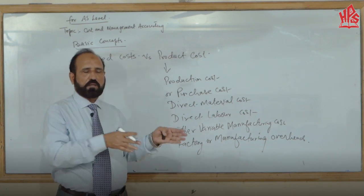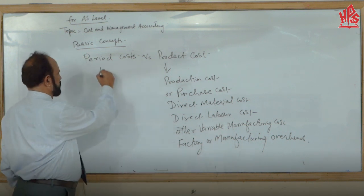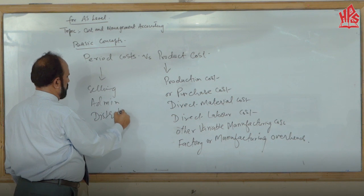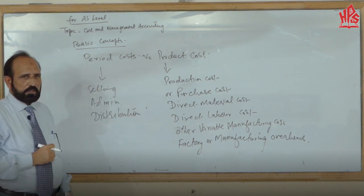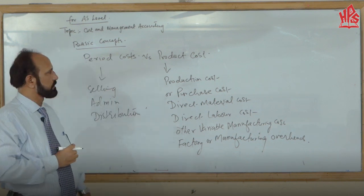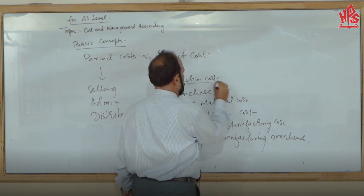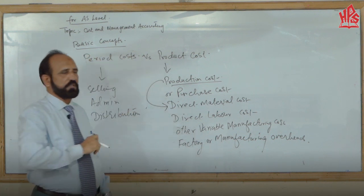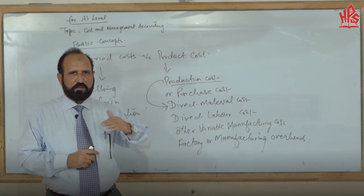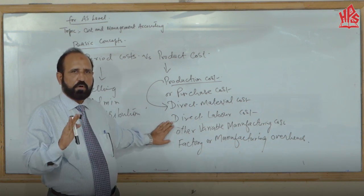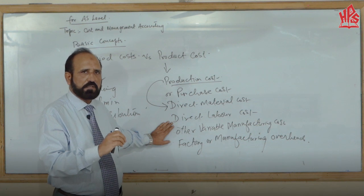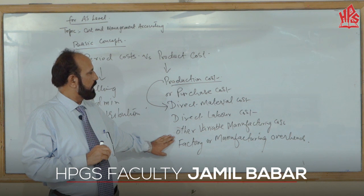The accumulation of all these costs gives you the product cost. Period cost includes all other costs incurred after the factory stage — like selling expenses, administration expenses, and distribution expenses — which are incurred to sell the goods. Direct material is the cost of material used in production that is identifiable, and direct labor is the cost paid to workers or machine operators who are directly involved in production.